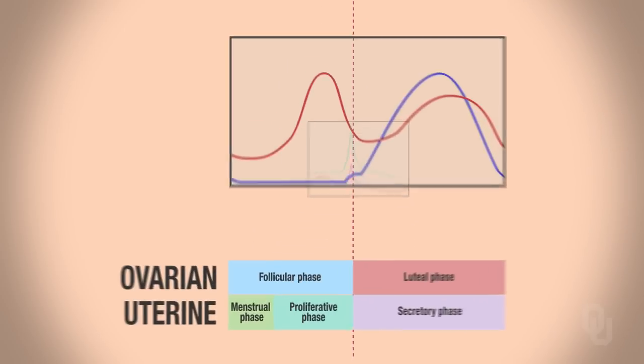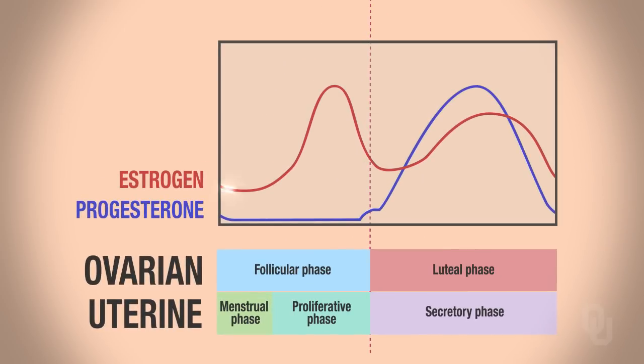Let's start at the top diagram, which illustrates estrogen and progesterone levels. The estrogen that we see here — this increase is where estrogen is being secreted by the follicle. Remember, in the follicular phase, the follicles are growing.